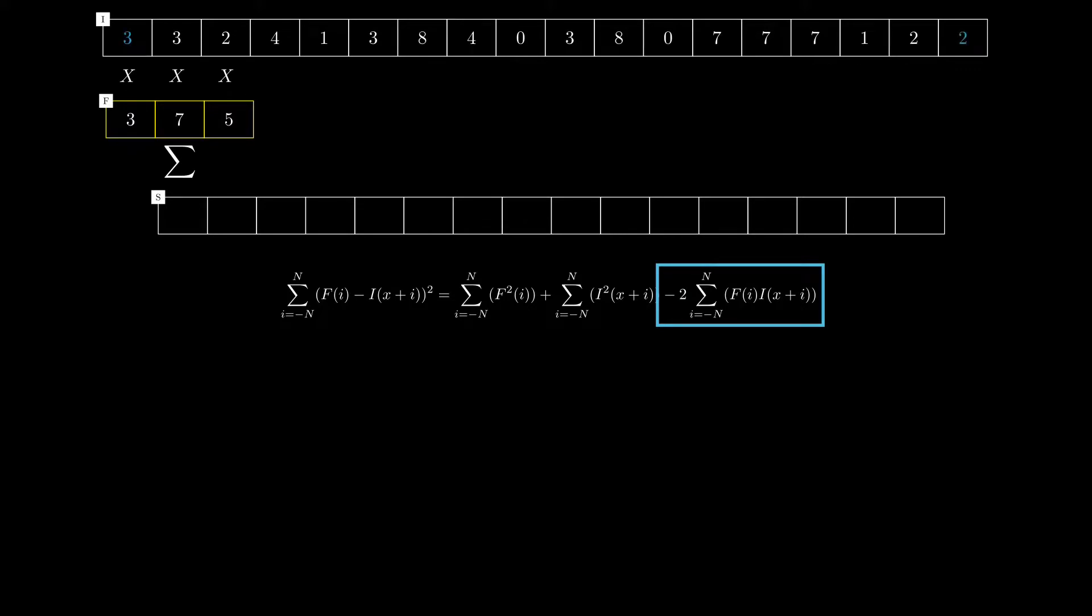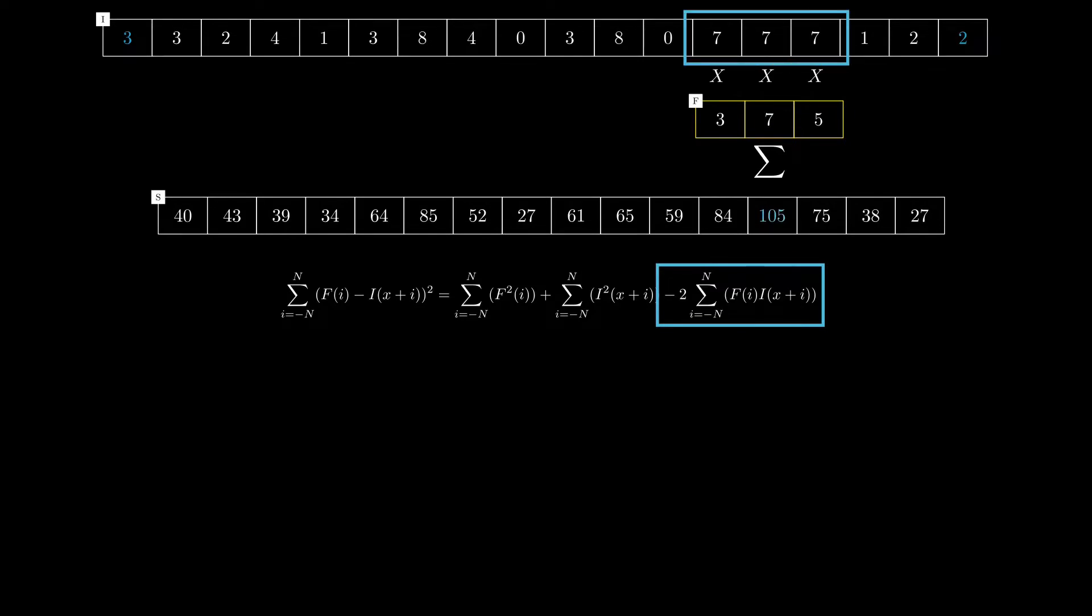Result for the first entry is 40, and let's slide it over the rest of the vector I. As I mentioned earlier, the bigger value of correlation will imply smaller Euclidean distance. So we look for the highest value in the vector S, and the highest value in the vector is 105 and the corresponding segment in the image I is 777.